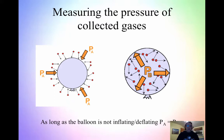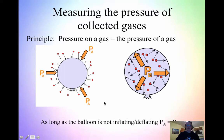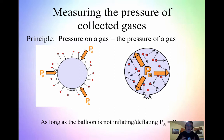Next, we're going to look at measuring the pressure of collected gases. You'll be finding the molar volume of a gas and collecting the gas in a specific instrument. When measuring the pressure of the gas, the principle we can use is that the pressure on a gas equals the pressure of a gas. Think of it like a balloon — the atmospheric pressure on the outside equals the pressure inside the balloon, because it's not inflating or deflating. As long as it's not inflating or deflating, pressure A on the outside equals pressure B inside.